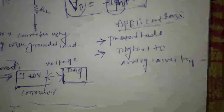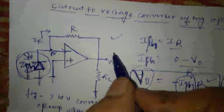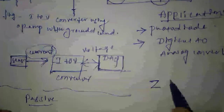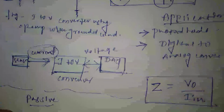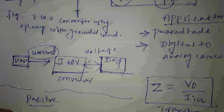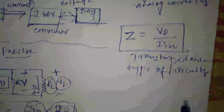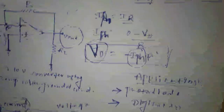Such circuits, where input is current and output is voltage, are called trans-impedance type circuits. Trans-impedance is given by Z equals output voltage divided by input current. That's all — I hope it is clear. If you have any doubts please comment in the comment section. Thank you.